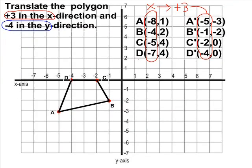For example, for point A, the x value was negative 8. If we were to add positive 3 to negative 8, it does make negative 5 and that's exactly where our new A point is located. For point B, we started at negative 4 and negative 4 plus 3 does make negative 1.